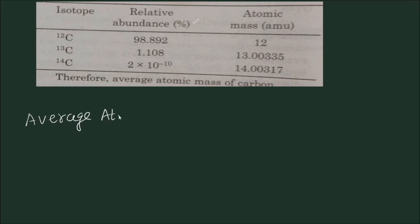Atomic mass of carbon equals: the first isotope has atomic mass 12 and its abundance is 98.892, plus 13.00335 times 1.108, plus 14.00317 times 2 times 10 raised to minus 10, and this whole is divided...